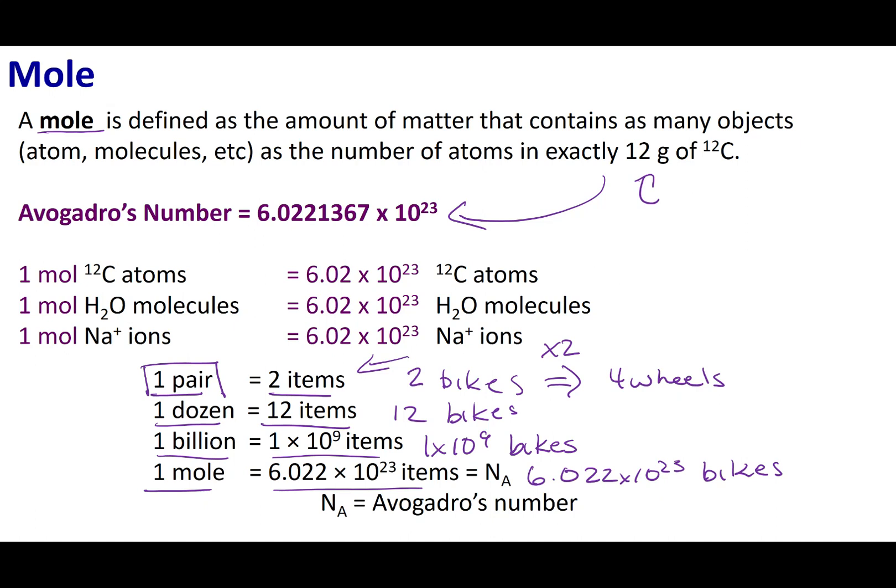The same can be said with a mole of bicycles. If I have a mole of bicycles, that means I have 6.022 times 10 to the 23rd bicycles, but I have two times 6.022 times 10 to the 23rd wheels. So this becomes important about what you say.